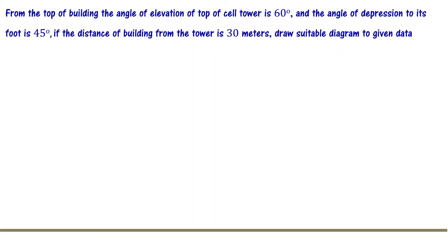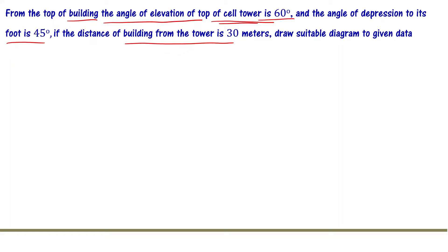From the top of a building, the angle of elevation of the top of a cell tower is 60 degrees and the angle of depression to its foot is 45 degrees. If the distance of the building from the tower is 30 meters, draw a suitable diagram for the given data. We can see a building, and the angle to the top of the tower is 60 degrees. The distance between the building and the tower is 30 meters.